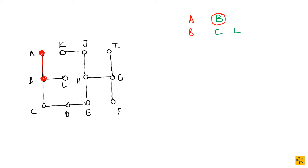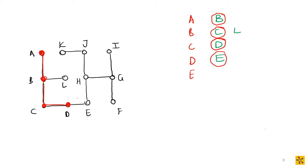We choose one alphabetically, so we choose C and activate it. Now we look at the adjacent vertices to C which are inactive — that's D — and we activate it. Next we look at the inactive vertices adjacent to D, and we only have E, so we activate E. And the same thing continues: we activate H.